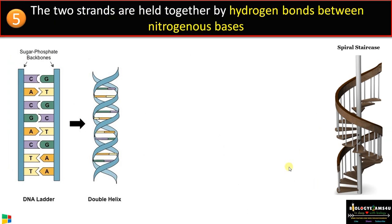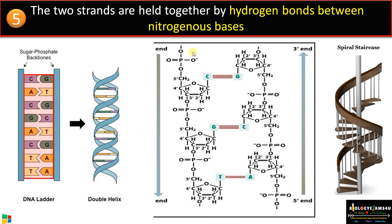Point number six: the two strands are held together by hydrogen bonds between the nitrogenous bases. As you can see in this DNA ladder, the nitrogenous bases join the two strands together — the first strand and the second strand are connected by hydrogen bonds between the nitrogenous bases.